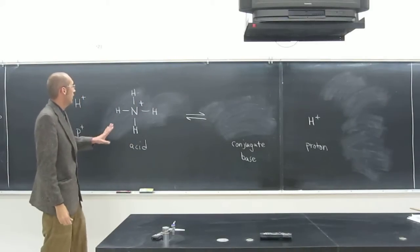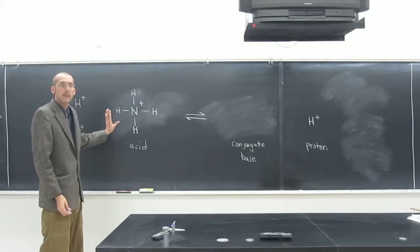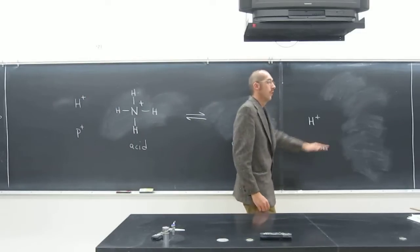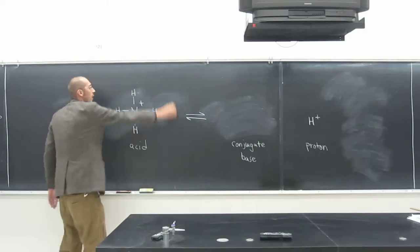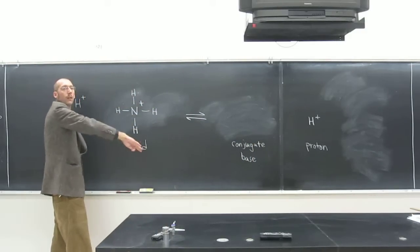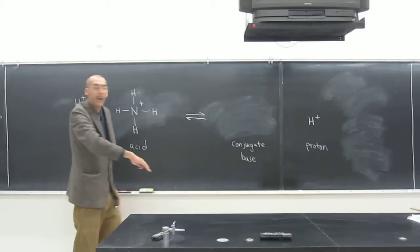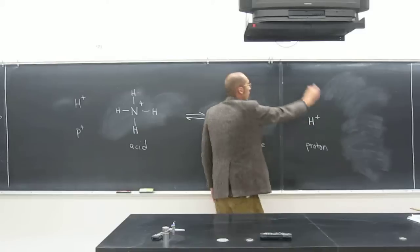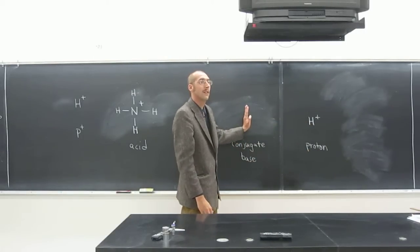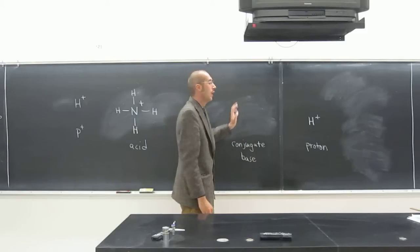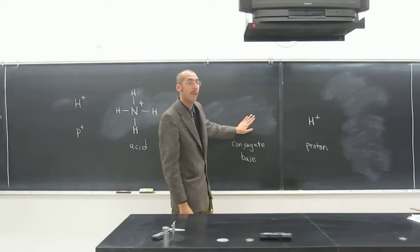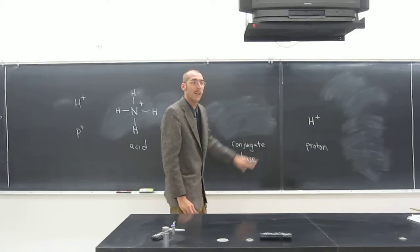So if we think about the ammonium ion and it losing a proton, this side overall is, what's the total charge of this side overall? Plus one. Plus one, right? And overall already this side is what? Plus one. So can you add anything else to this? Any more numbers? No. So this thing has to be neutral. The thing that you're making here has to be neutral. Is everybody okay with that?